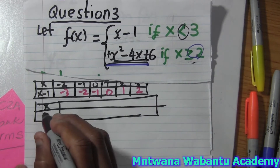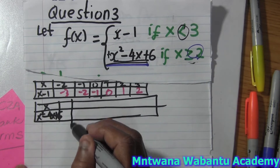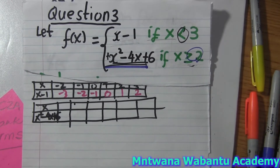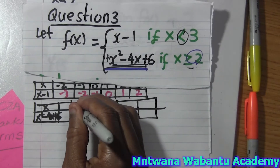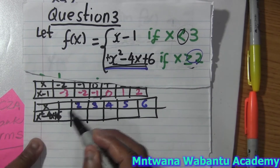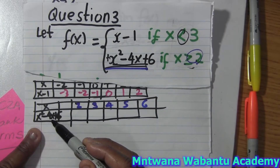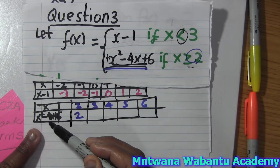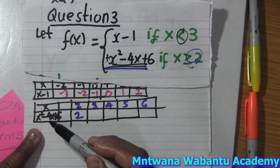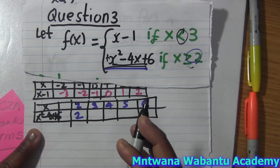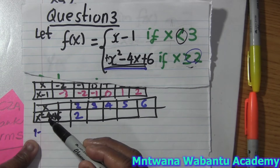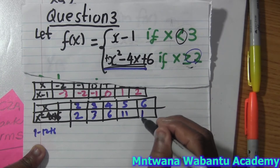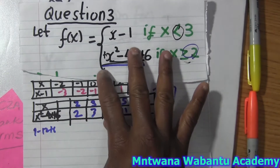For the second piece, f(x) = x² minus 4x plus 6, where x is greater than or equal to 2. Starting from x = 2: 2 squared is 4, minus 4 times 2 is 8, so 4 minus 8 is negative 4 plus 6 equals 2. For x = 3: 9 minus 12 plus 6 equals 3. For x = 4, 5, 6 the values continue giving coordinates like 6, 11, 18. So we have all coordinates for both pieces.